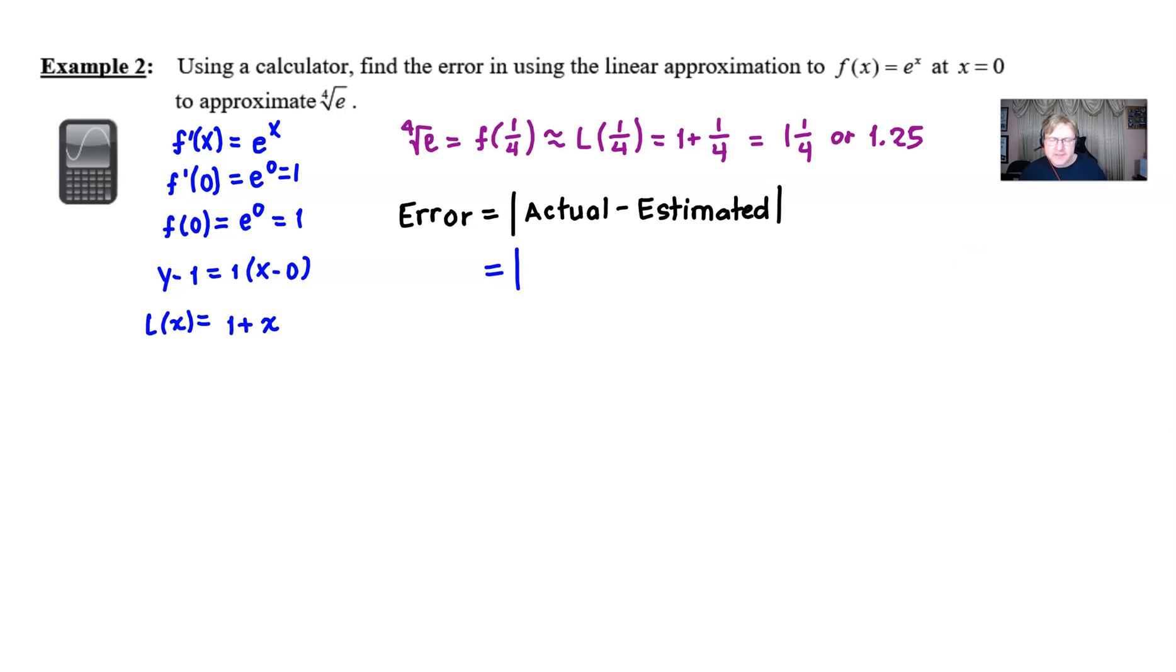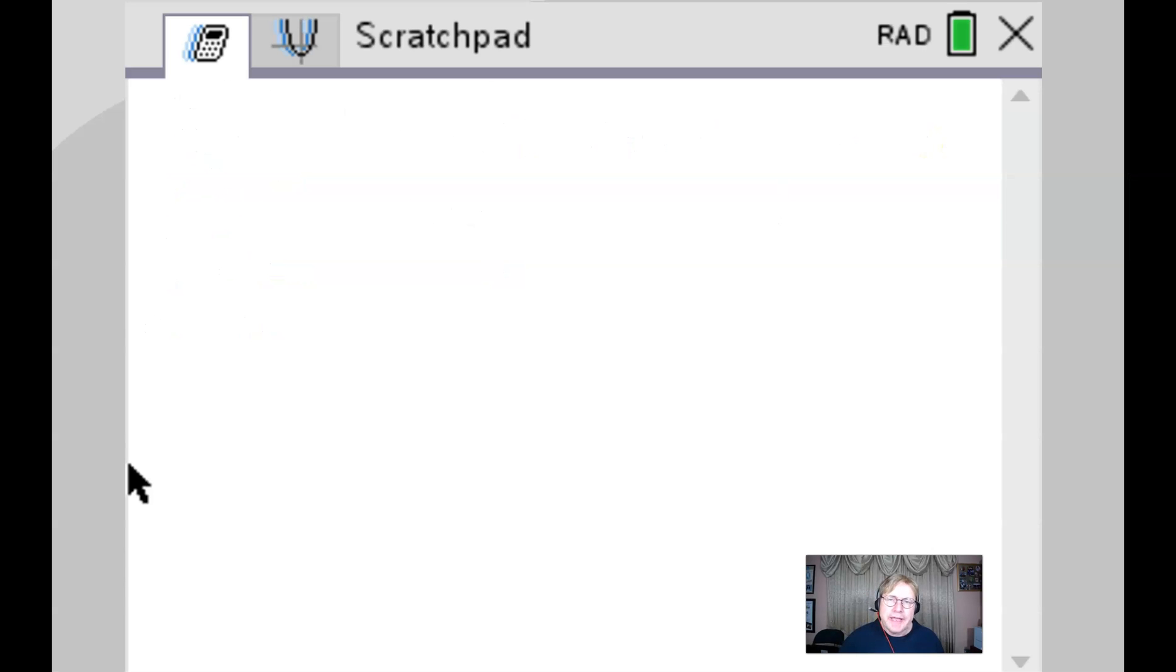So, let's figure this out by going to our calculator. Now, remember, what are the two things that we want to figure out? Well, the actual answer, which is the fourth root of e, and then the estimated answer, which we found to be 1.25. Let's see what the calculator gives us. So, here we go. Which one do we want to do first? Well, it really doesn't matter. How about we put that fourth root of e. Now, I'm using the TI INSPIRE. You can really use any scientific calculator to do this.